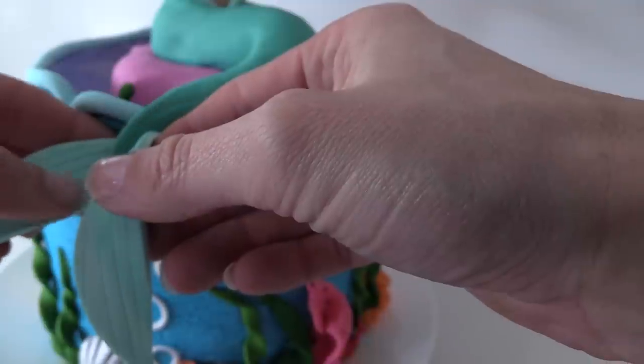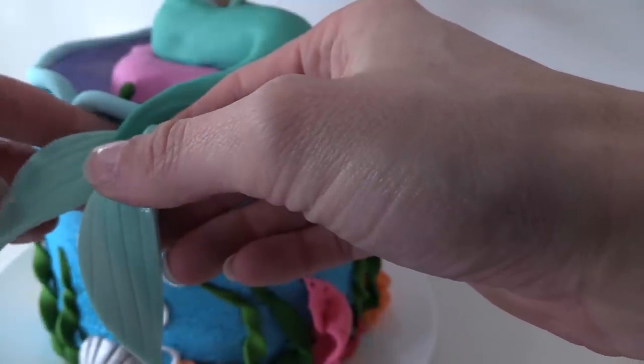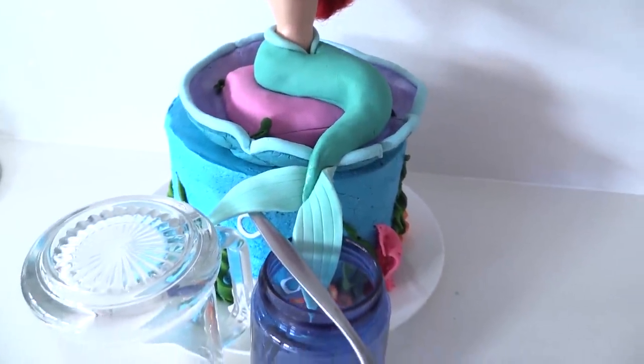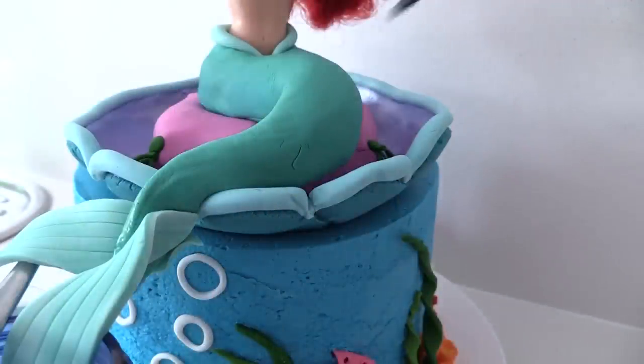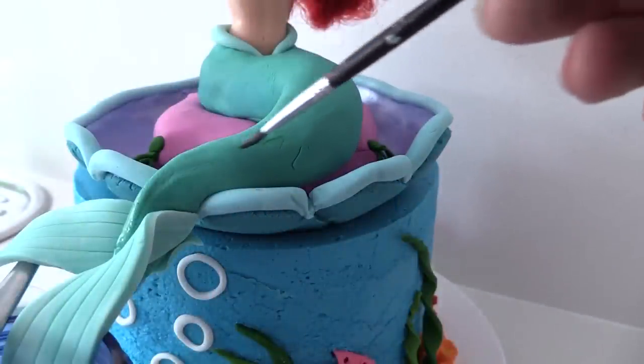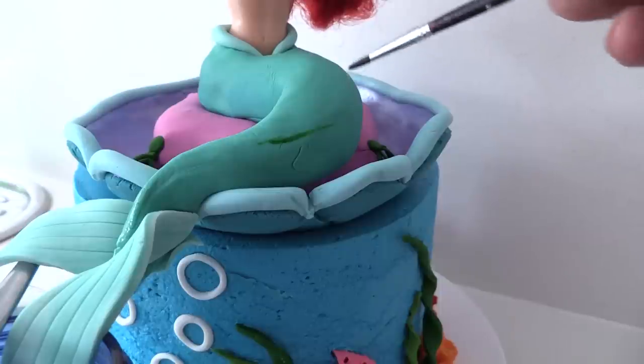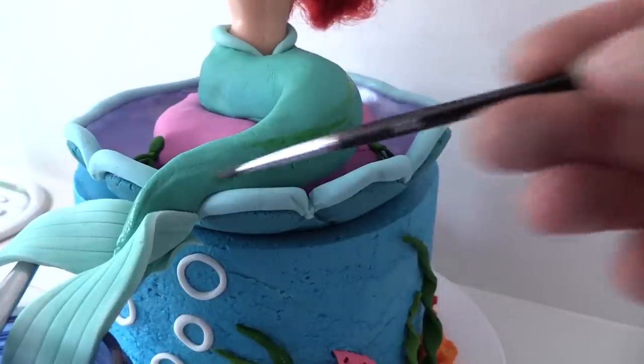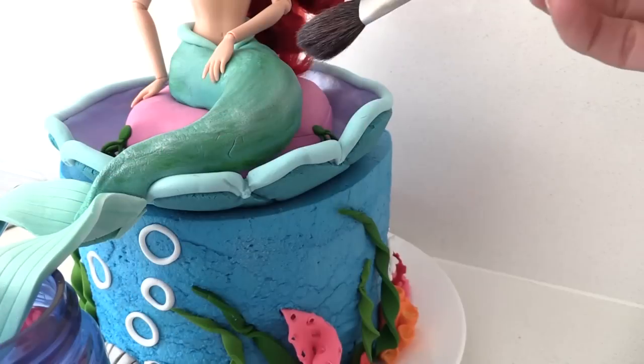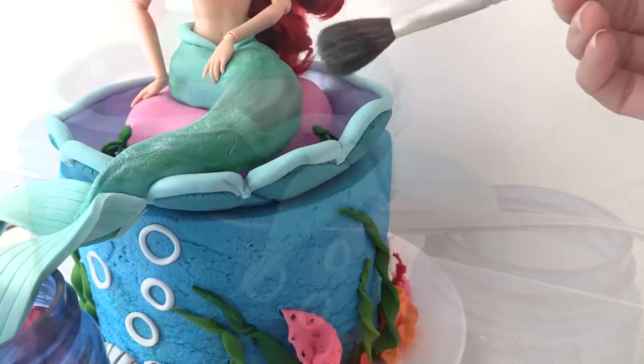While it's drying, you'll need to support it using cups and a fork or whatever you have at the right height. Let that dry overnight. Brush the tail with diluted green gel coloring to give it a flowing look, then once that's completely dry, brush on some luster dust to give it a shimmer.